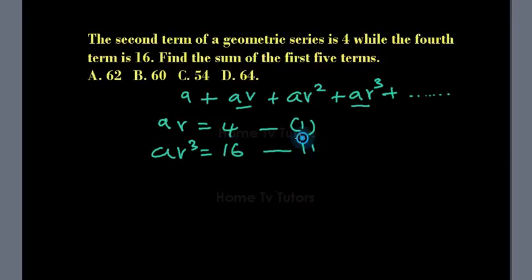So now we divide equation 2 by equation 1. That is ar³ divided by ar equals 16 over 4. So these cancel out. 4 into 16 is 4. 4 into 16 is 4.